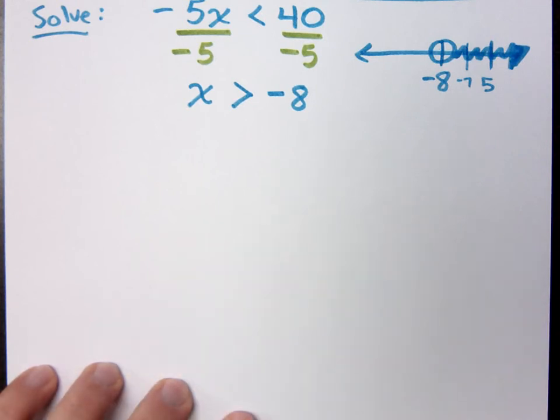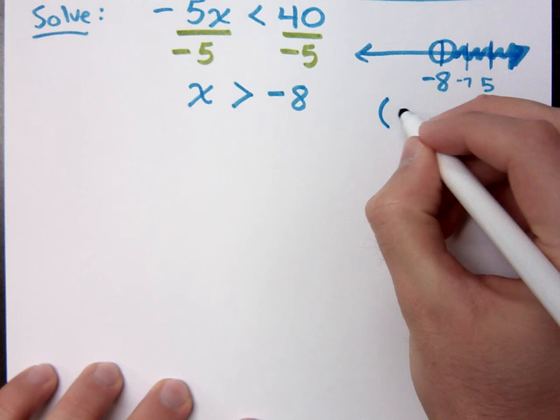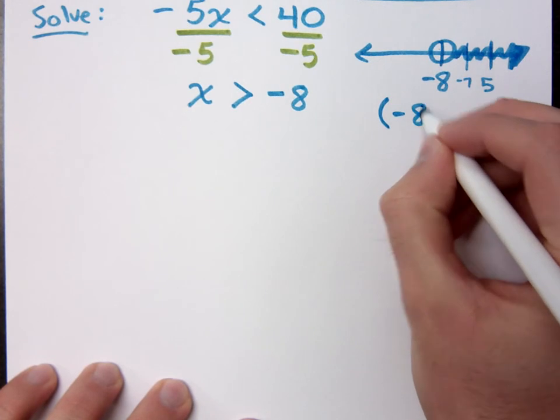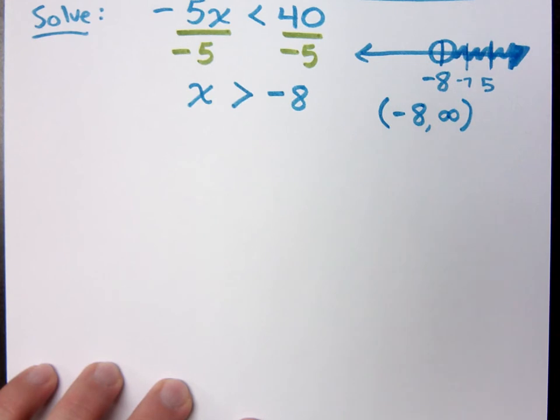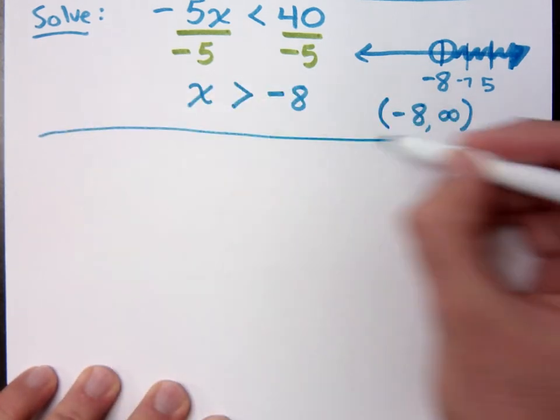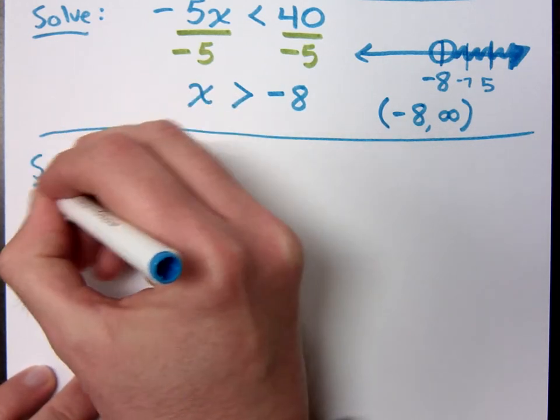If I do the interval notation, it's from negative 8 to what? To infinity. Why do I not have a bracket? Because it's not closed off. Because I'm not including anything there.